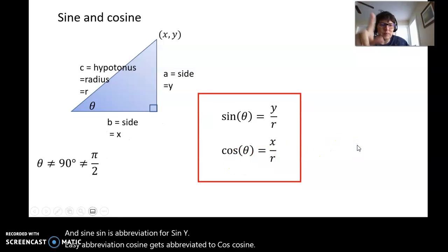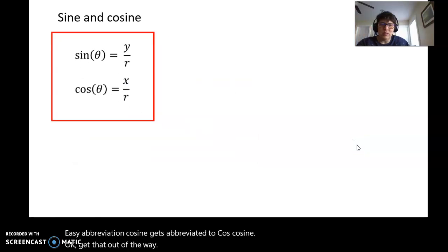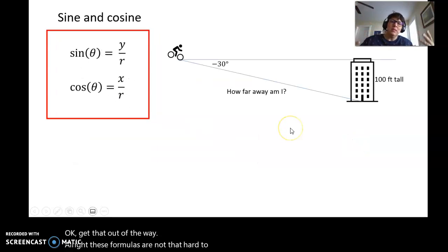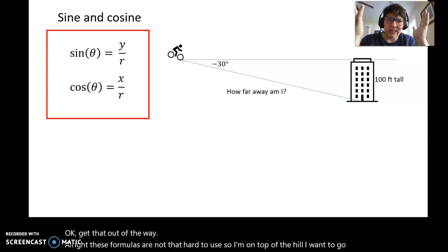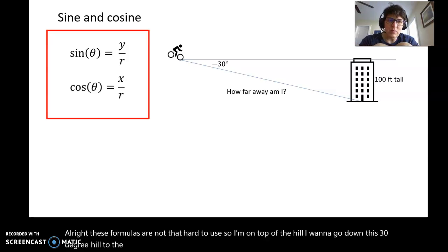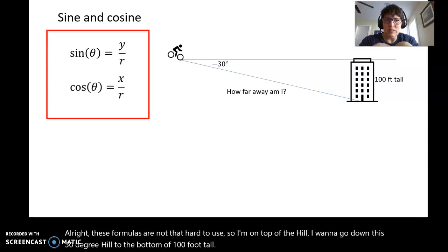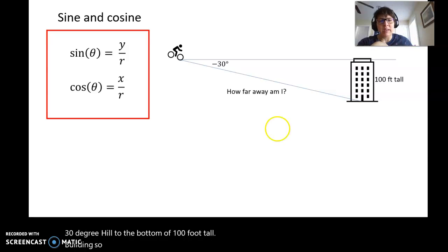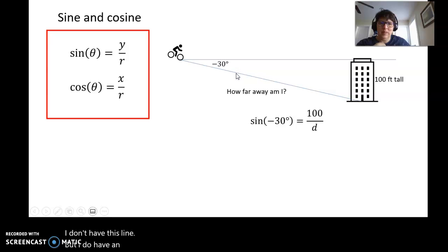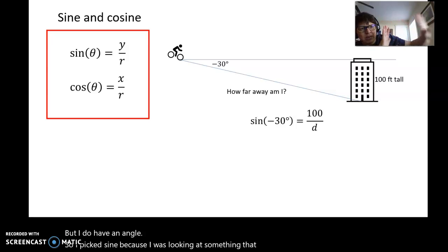Alright, these formulas are not that hard to use. So I'm on top of a hill. I want to go down this 30 degree hill to the bottom of a 100 foot tall building. So how far away am I? This is that distance formula. In this case, I don't have this line, but I do have an angle. I picked sine because I was looking at something that was away from my angle. It wasn't connected to my angle at all.